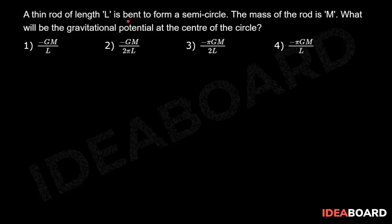A thin rod of length L is bent to form a semicircle. The mass of the rod is m. What will be the gravitational potential at the center of the circle?